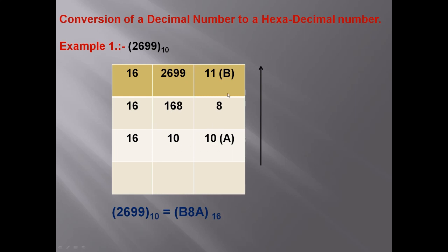We will write 10 here. In hexadecimal, values start from 10=A, 11=B, 12=C, 13=D, 14=E, and 15=F. So we write the alphabet values: 10 for A, 11 for B. Reading from the remainders, the result is B8A. So the hexadecimal number value is B8A.